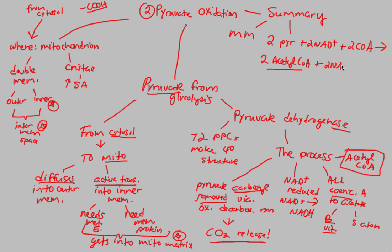We also make two NADH molecules — the purpose of these will be explained later, as we also made them in glycolysis. And for the first time, we make two CO2 molecules, which are released — this is what we breathe out, part of the reason CO2 is a product of cell respiration. So overall, step two of cellular respiration is pyruvate oxidation, immediately following glycolysis: pyruvate is taken from the cytosol, put into the mitochondria, and through pyruvate dehydrogenase gives us two acetyl coenzyme A molecules.